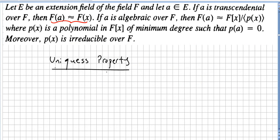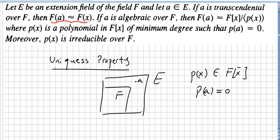Here I want to remind you the uniqueness property. If a is algebraic over a field F, then there is a unique monic irreducible polynomial p(x) in the ring of polynomials such that p(a) equals zero. This is called the uniqueness property.